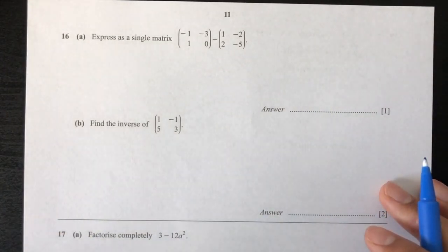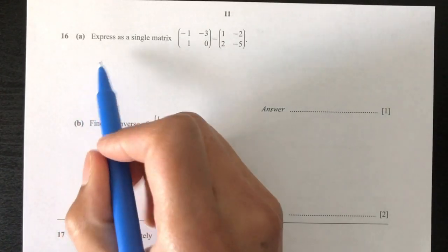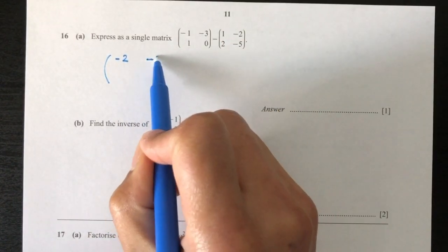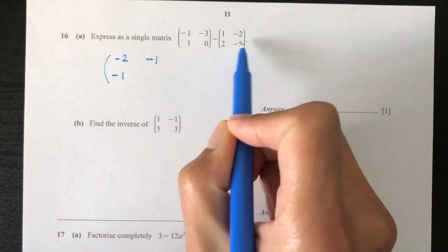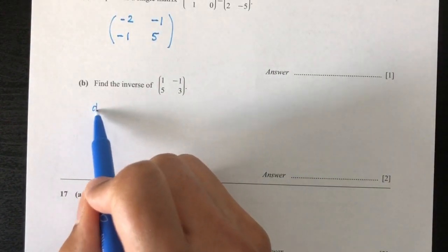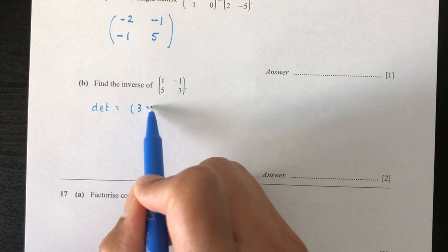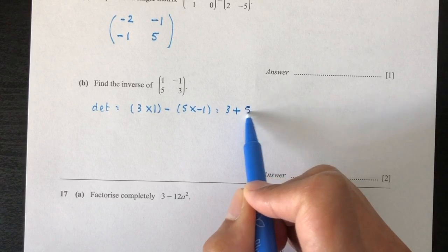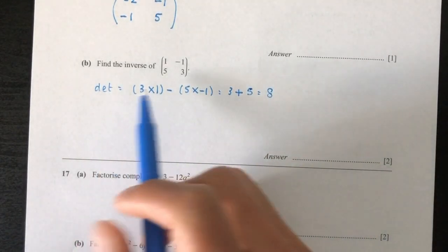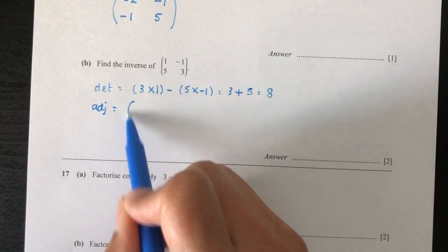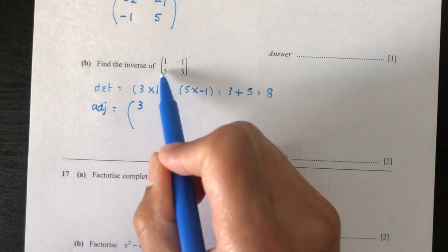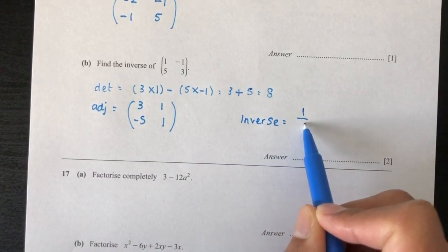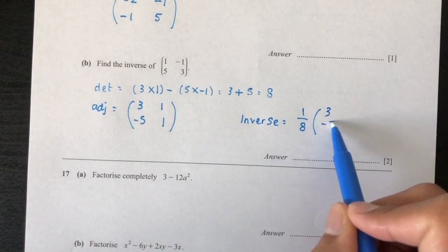Now question number 16. Express as a single matrix — subtracting the matrices: -1 minus -1 gives -2; -3 minus -2 gives -1; 0 minus -5 gives 5. So the result matrix has entries giving us values for finding the inverse. First find the determinant: 3 times 1 minus 5 times -1 equals 3 plus 5 equals 8. Then find the adjoint matrix by swapping positions and changing signs, giving entries 3 on top and 1 below, with -5 and 1. The inverse equals 1 over 8 times the adjoint matrix.